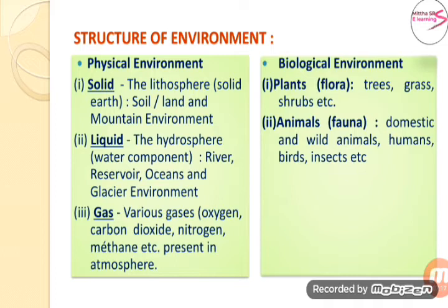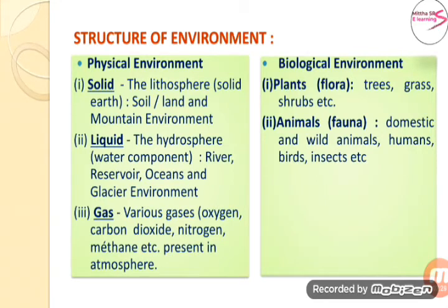Now we will see the structure of environment: physical environment and biological environment. Physical environment consists of three types: solid, liquid, and gas. Solid refers to the lithosphere or the solid earth — land and mountain environment. Liquid refers to the hydrosphere, that is the water component present on the earth — for example river, reservoir, oceans and glacier environment. The third type is gas — various gases like oxygen, carbon dioxide, nitrogen, methane, etc.